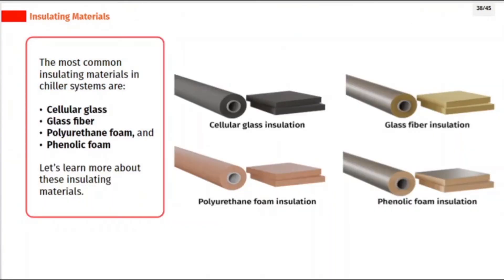The most common insulating materials in chiller systems are cellular glass, glass fiber, polyurethane foam, and phenolic foam. Let's learn more about these insulating materials.